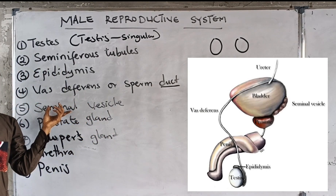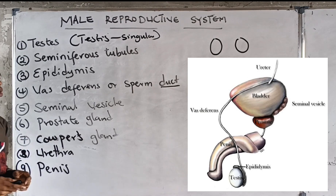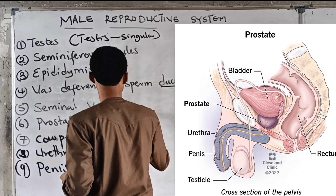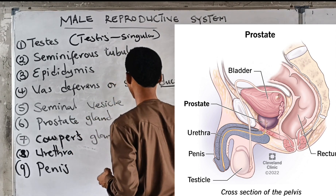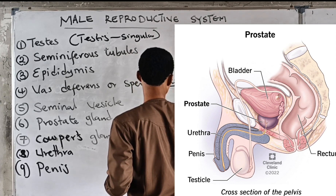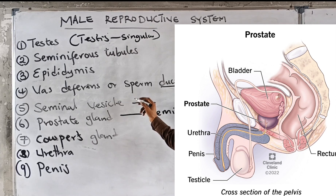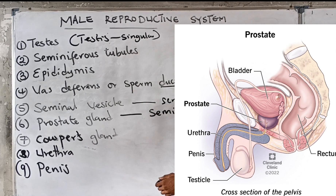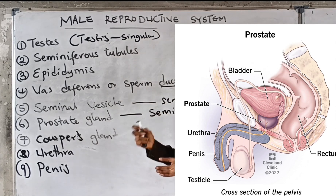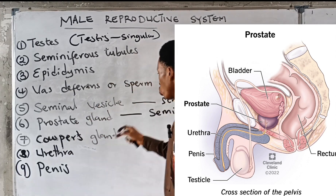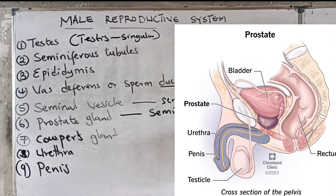The seminal vesicle stores sperm permanently until ejaculation. Apart from storing sperm, the seminal vesicle also produces seminal fluid. Sperm needs energy to survive, so the seminal fluid in the seminal vesicle contains fructose — a sugar — that provides energy to the sperm. The prostate gland also produces part of the seminal fluid that activates the sperm.